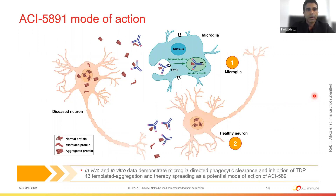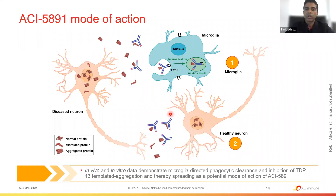The mode of action summary: the monoclonal antibody targeting the C-terminal region acts in the extracellular space, capturing TDP-43 species and resulting in internalization of immune complexes by Fc-mediated mechanisms into microglia for clearance. This simultaneously prevents the spread of aggregates to healthy neurons, potentially slowing disease progression and preventing loss of neuronal function induced by pathology.